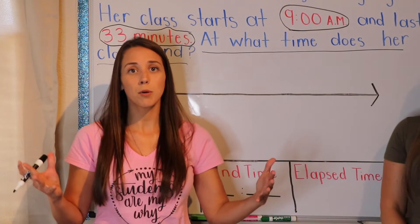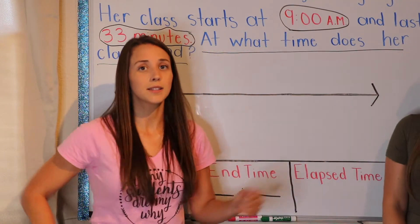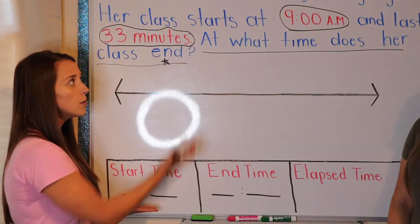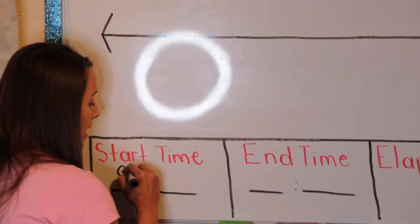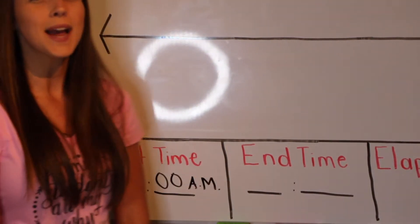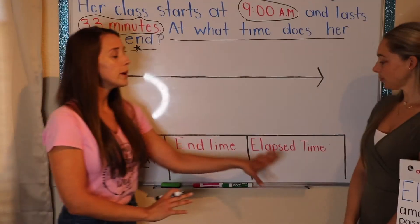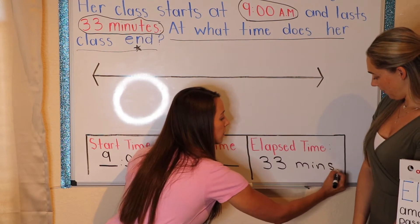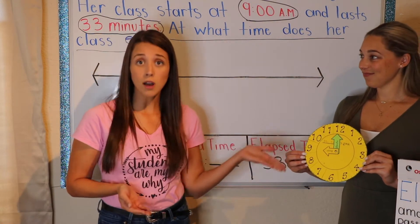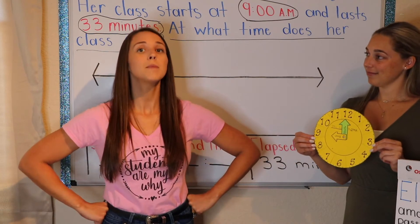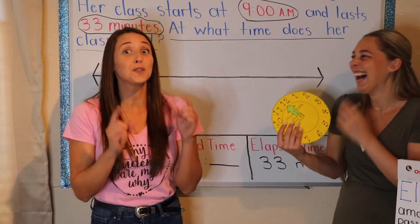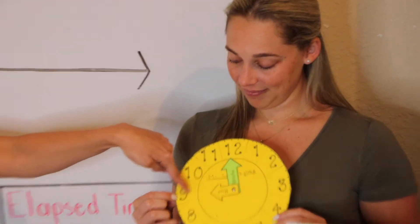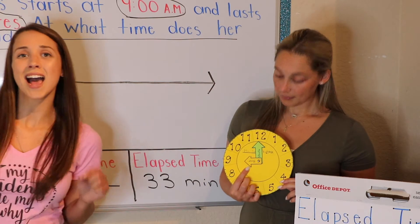One thing I always teach you guys before you begin a problem — set yourself up for success. If you said success, air high five. When you set yourself up for success, let's put in my start time. Ms. Jamie, what is my start time? 9 a.m. What's my end time? That's what we need to find out. So what are we going to put for elapsed time? 33 minutes. Good job. Now I'm going to abbreviate minutes. We know the small hand holds all the power because it tells me the hour. So my small hand is on the 9 because that's my hour, and my minute hand is on the 12 because it is 9 o'clock on the dot.